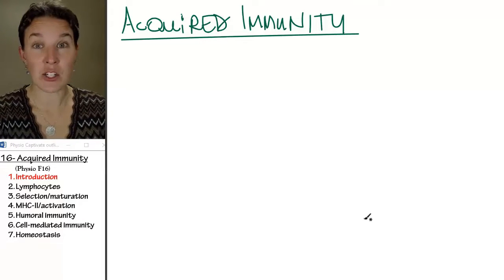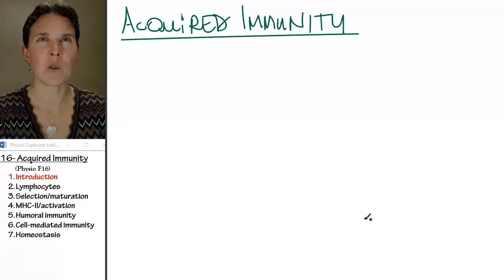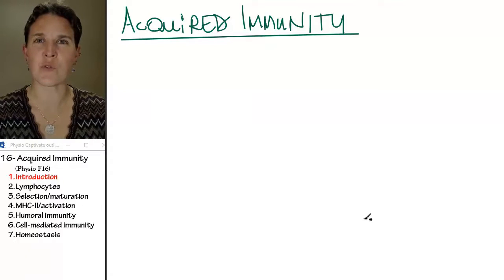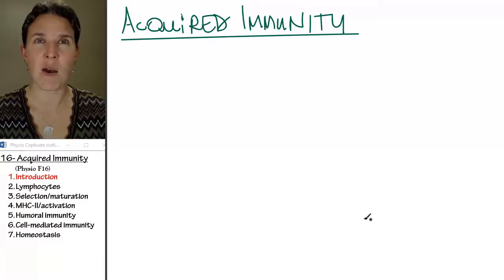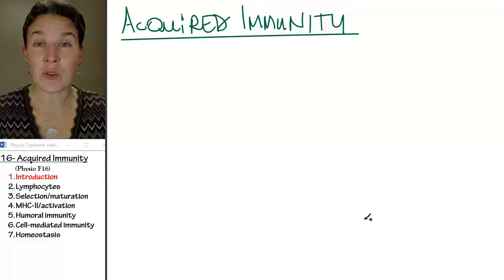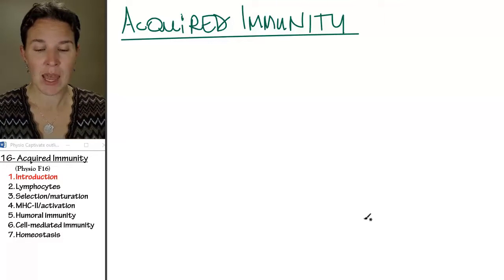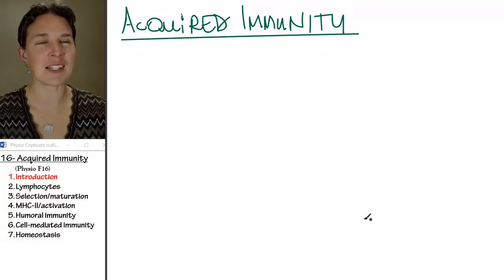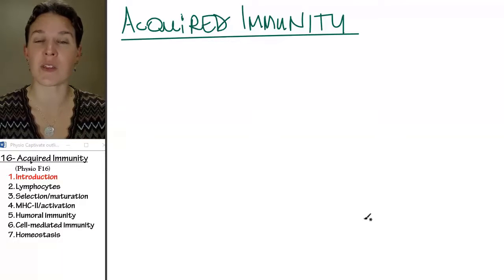In the last lecture, we did innate immunity, and these were responses to foreign invaders or pathogens or antigens that were very generalized responses. The acquired immune response is very specific. It's very slow. It takes a while to ramp this thing up. Once we ramp it up, it's not messing around, and we can do some serious damage with the acquired immune response.